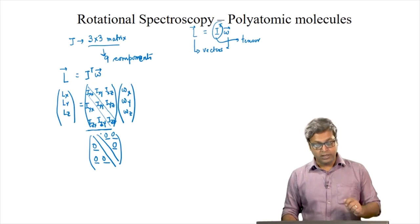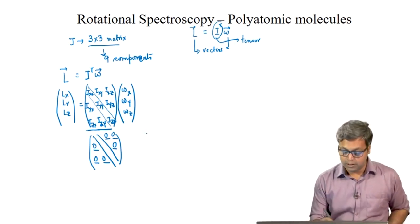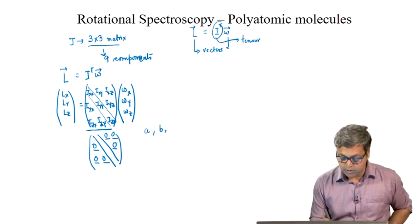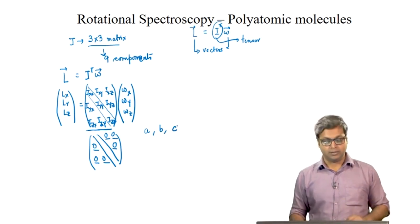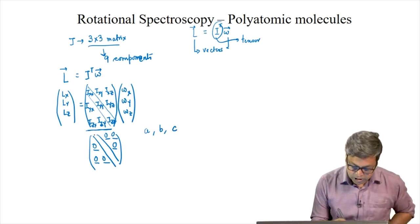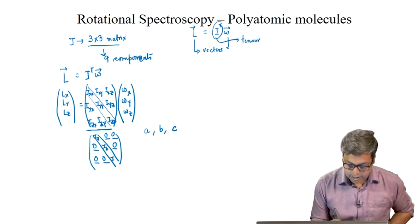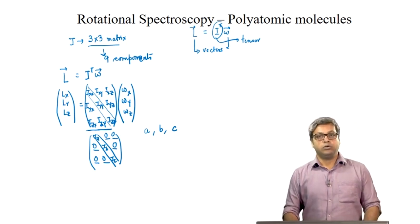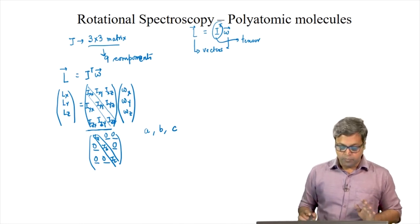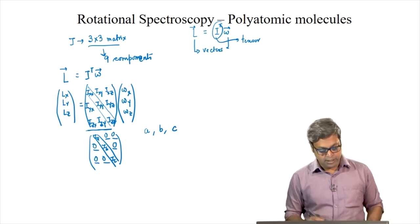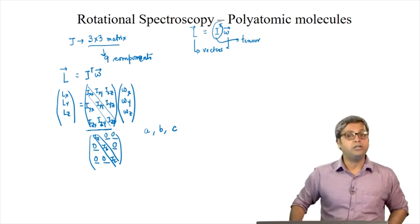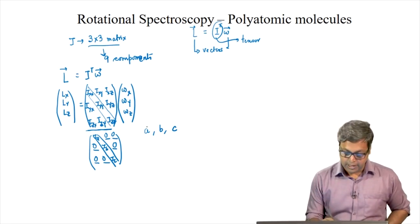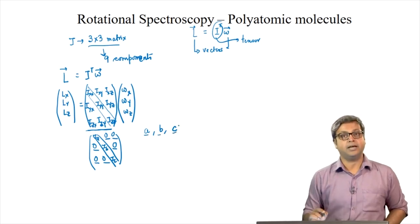These axes are called A, B, and C axes. The moment of inertia will be IA, IB, and IC. IA, IB, and IC represent the moment of inertia along the A, B, and C axes.